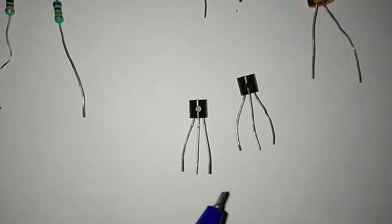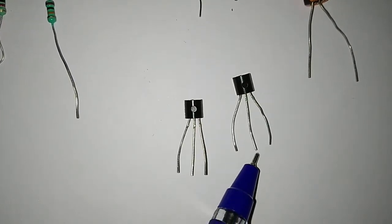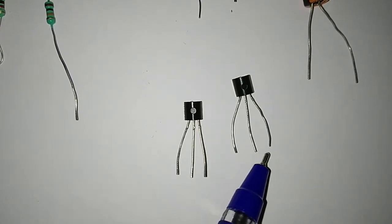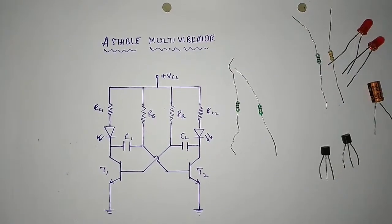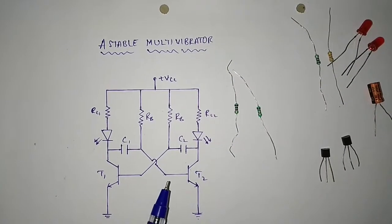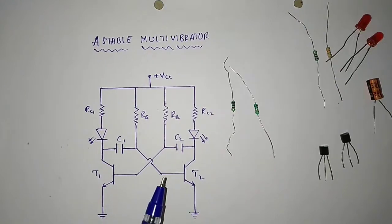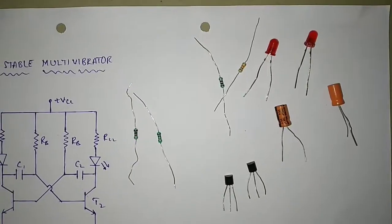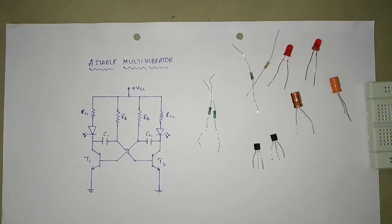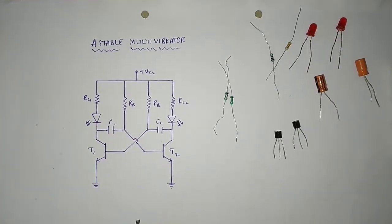In this transistor, this is the emitter terminal, this one is the base terminal, and this one is the collector terminal. Here, to observe the transistor ON and OFF conditions, we are using LEDs at the collector terminals. These are the two LEDs.